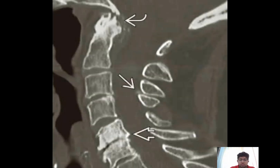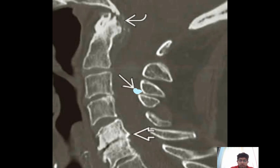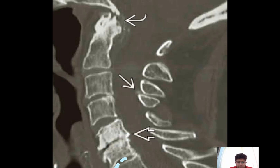This image shows axial skeleton involvement, with calcification posterior to the dens, a cyst in the anterior arch of the atlas, and ligamentum flavum calcification. There is also involvement of the intervertebral disc calcification, which is a classical finding in pyrophosphate arthropathy.